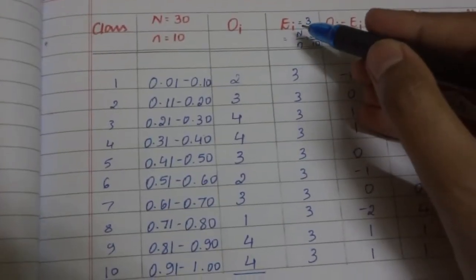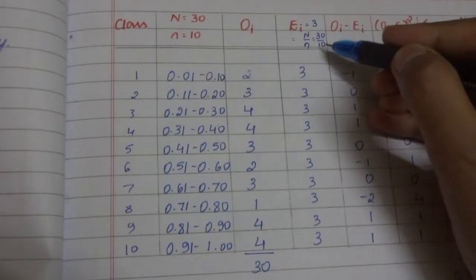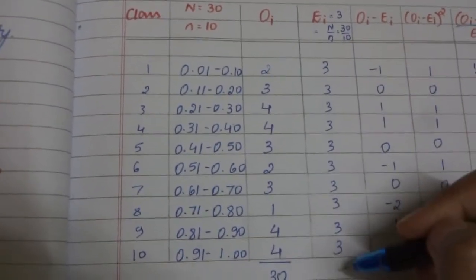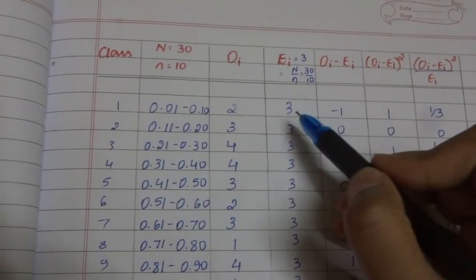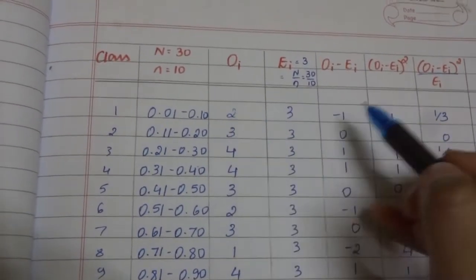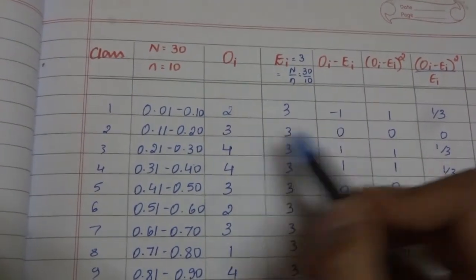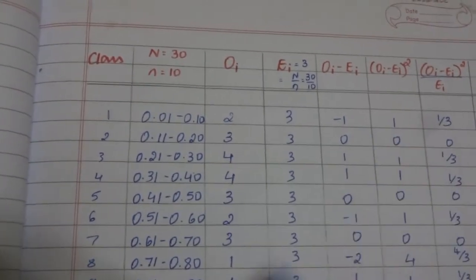Now ei is capital N by small n, that is 30 by 10, you get 3. It remains the same in the whole column. oi minus ei is subtracting this value from oi. So you get 2 minus 3 is minus 1, 3 minus 3 is 0, 4 minus 3 is 1, and so on.